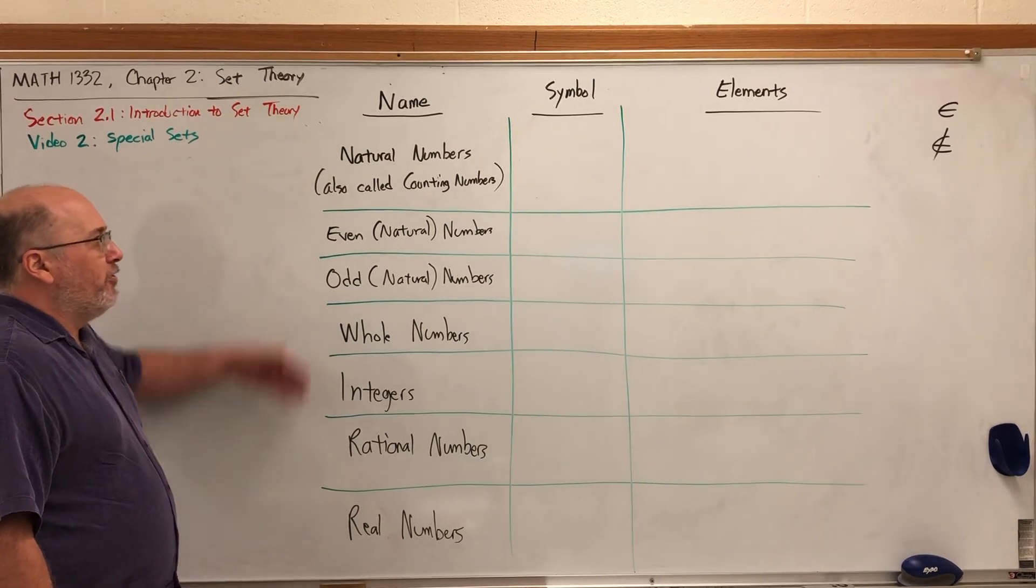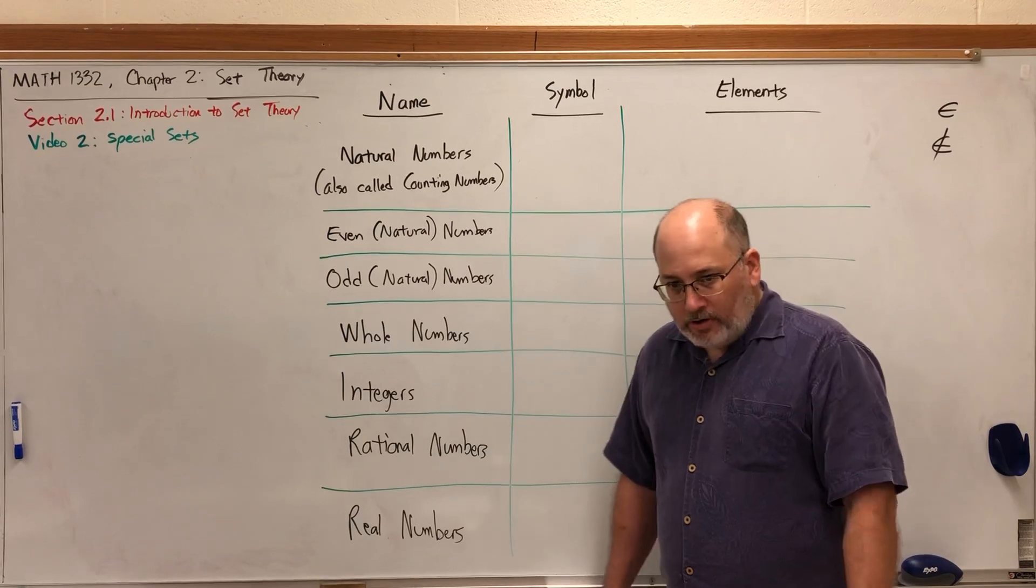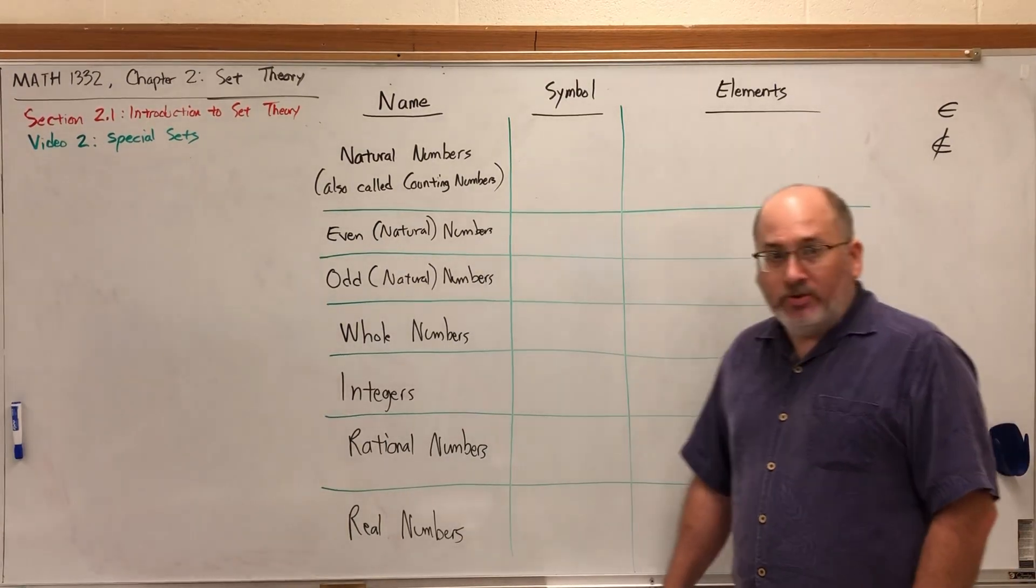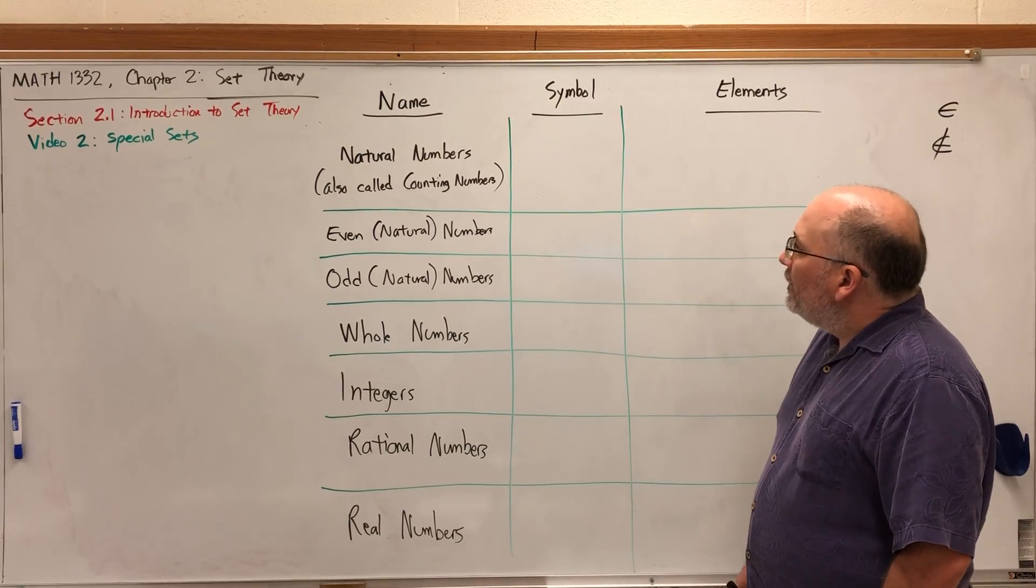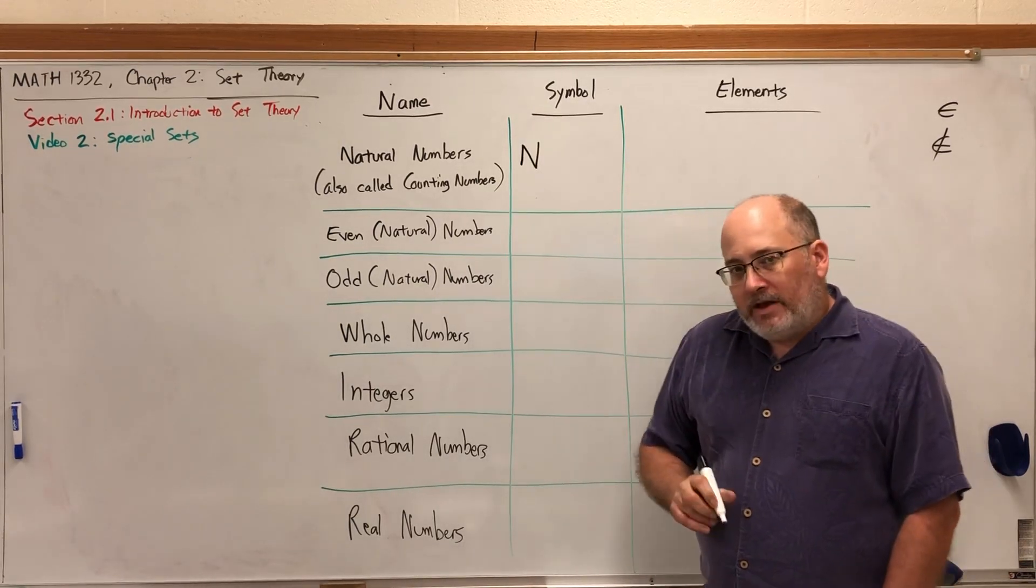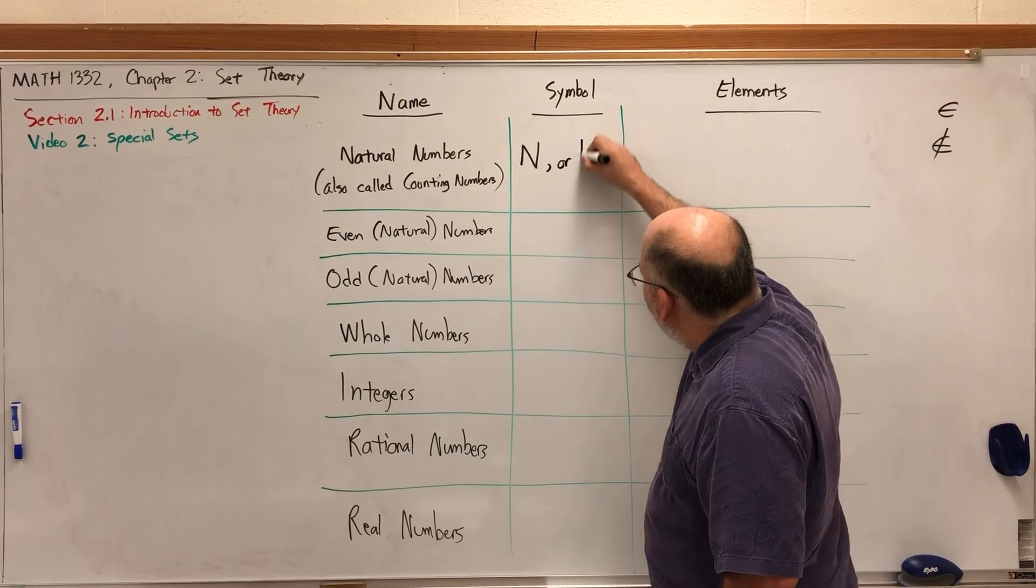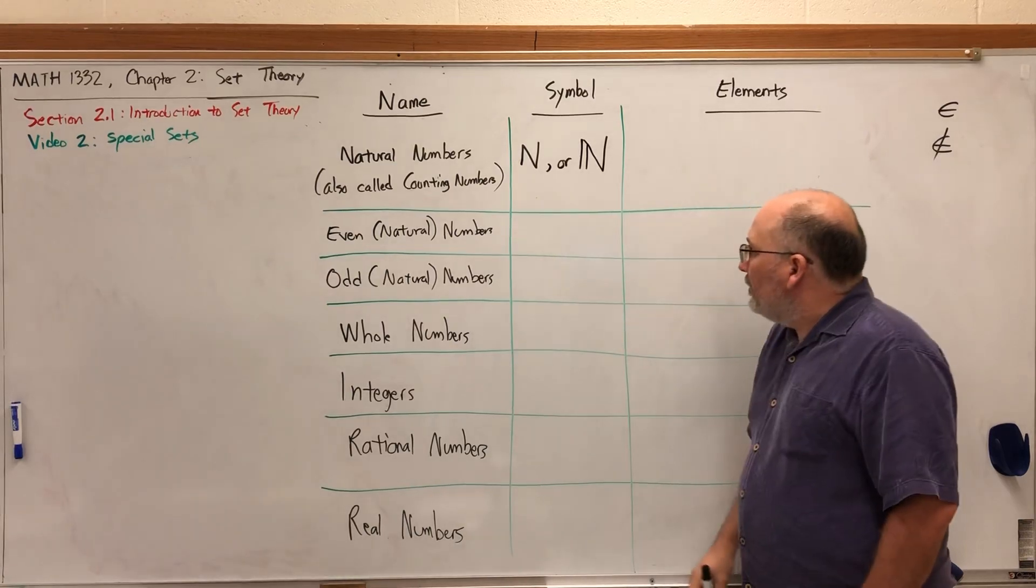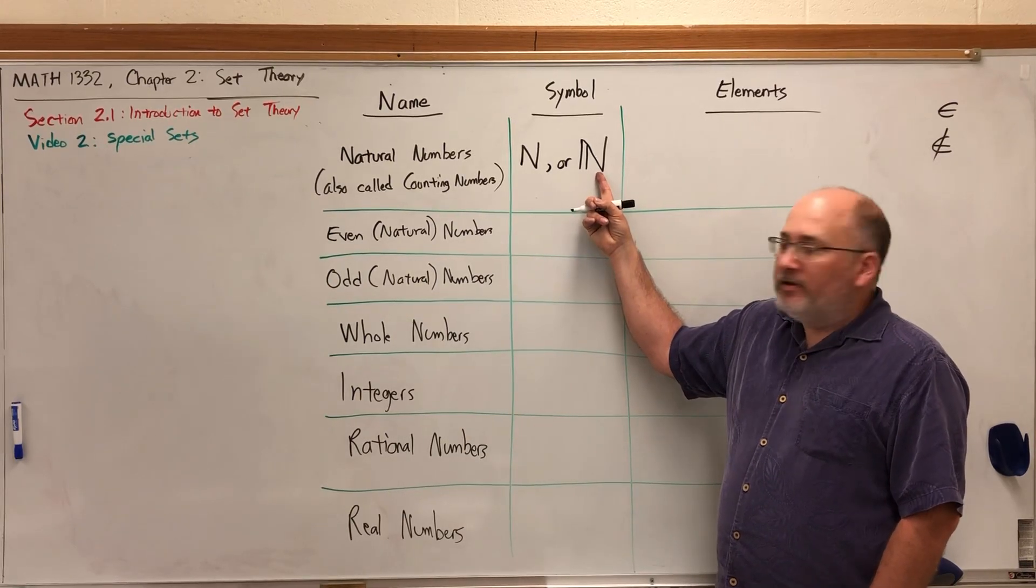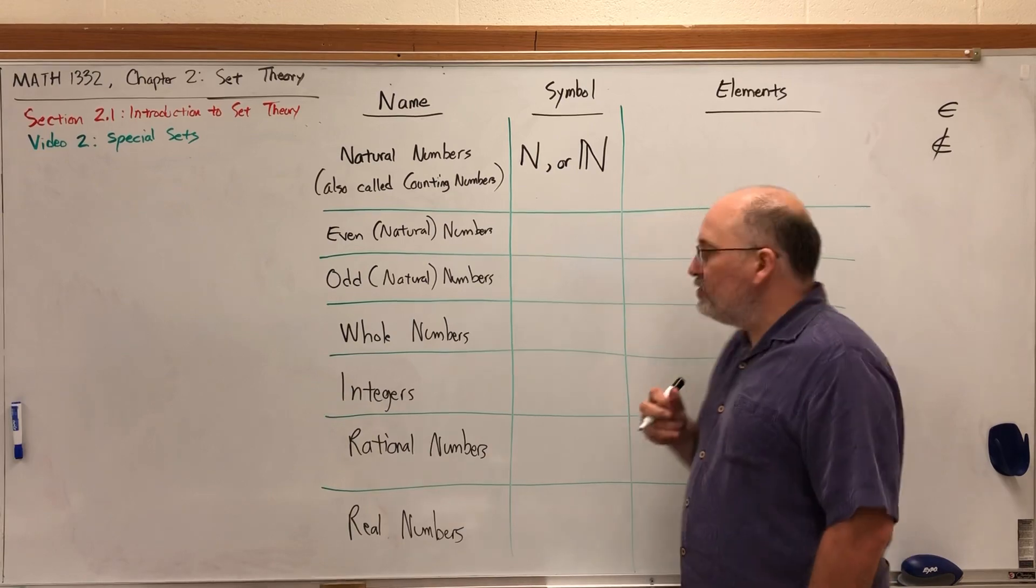The first special set we're going to talk about are the natural numbers, which are also called counting numbers. Each of these sets has a single letter way to represent them. The symbol for natural numbers is a capital N. However, in some math classes, it's not just a regular old capital N, but it's what's called a double script capital N.